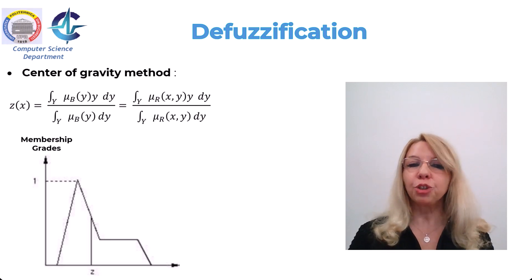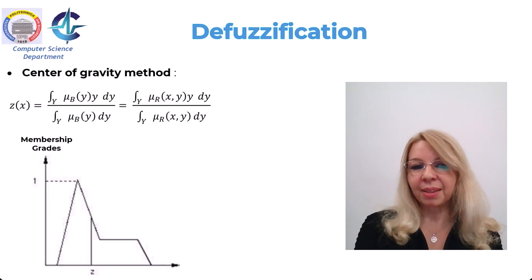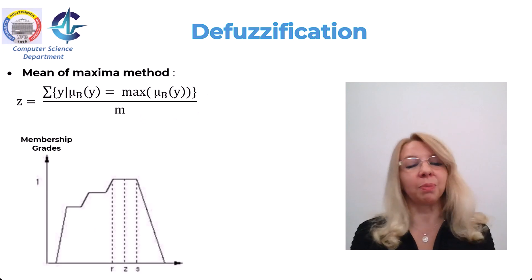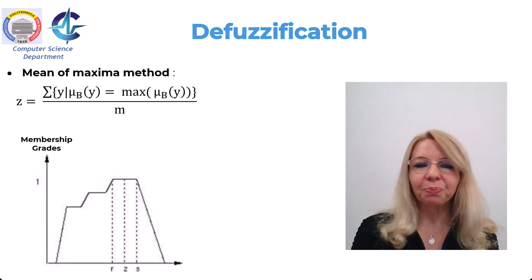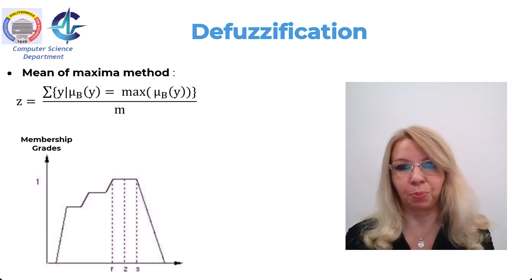Several defuzzification methods were developed. The most used ones can be considering the center of gravity method, the mean of maxima. This one provides the possibility to choose the point with the maximum membership value. The numerator in this case is the sum of the position of such maximal membership and the denominator is the number of such points.